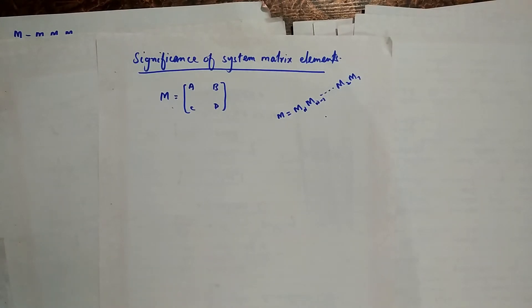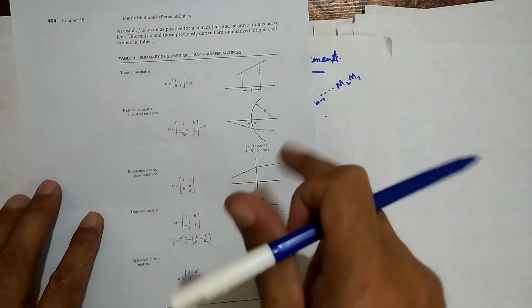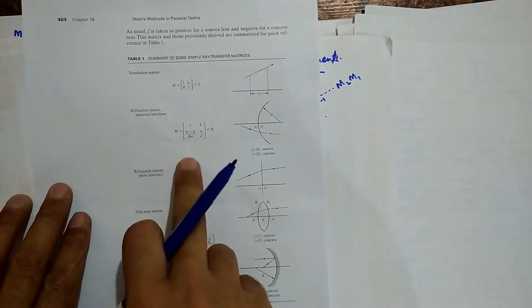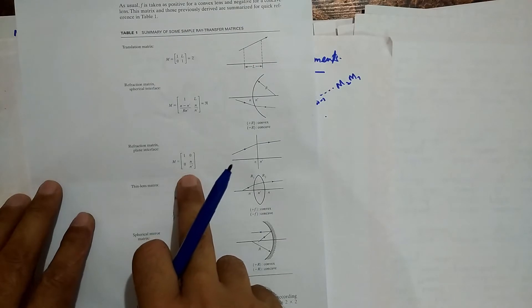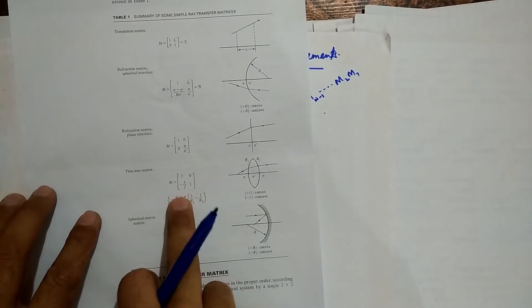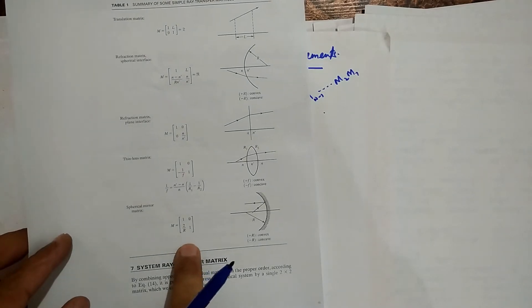Hello students. In today's lecture we are going to study the significance of the system matrix elements. In our previous lectures we derived many matrices for the translation of a light ray through a homogeneous medium, for refraction through a spherical interface, for a thin lens, and reflection from a spherical mirror. All these matrices are given in this table.